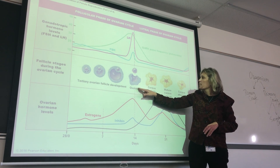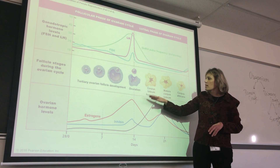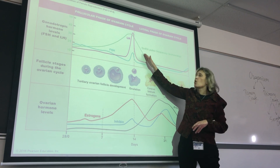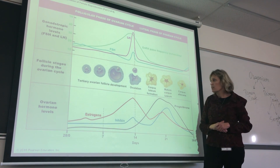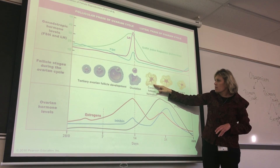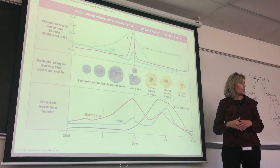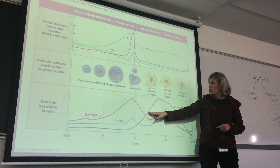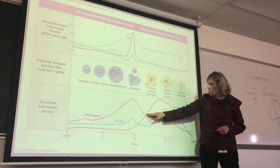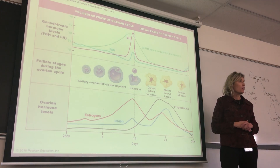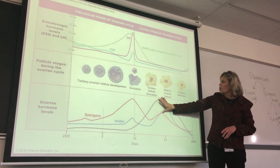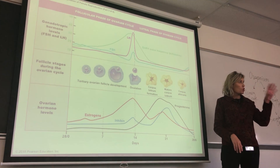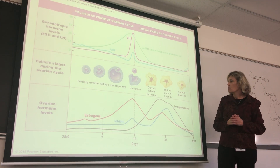After ovulation, the tertiary follicle degenerates into the corpus luteum and estrogen levels start to fall. The pulsing of gonadotropic releasing hormone starts to fall as well, so everything is falling. But then the corpus luteum starts to produce hormones again, and it's producing progesterone. So progesterone starts to get produced, and then estrogens start to get produced as well. The progesterone in particular is going to keep the corpus luteum mature so that it keeps releasing estrogen and progesterone.